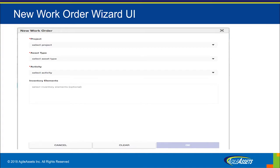So, for example, when a project selection is made, only the asset types defined in that project are displayed for selection in the asset type field. The same goes for the selection of an activity for a selected asset type. Also, if you start the work order creation by selecting an activity, the applicable asset types and projects will be filtered based on the selected activity.